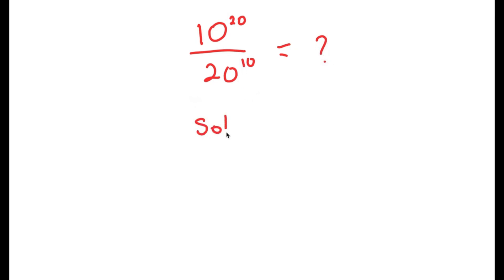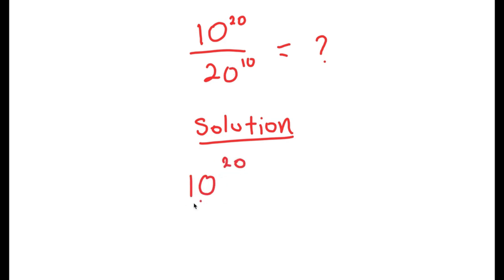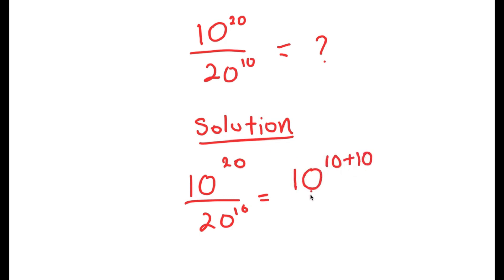For my solution, I'm first going to rewrite this as 10 to the power of 10 to the power of 20 over 20 to the power of 10. And I'm going to rewrite this as 10 to the power of 10 plus 10, over 20 to the power of 10 — so I rewrote the exponent 20 as 10 plus 10.